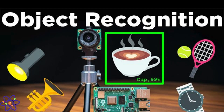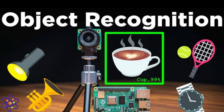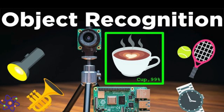Object recognition involves identifying and categorizing objects within an image or video stream, requiring the computer vision system to assign a label to each recognized object. Object recognition is fundamental in applications like autonomous vehicles, surveillance, and robotics, enabling machines to understand and interact with their environment by recognizing and classifying various objects.